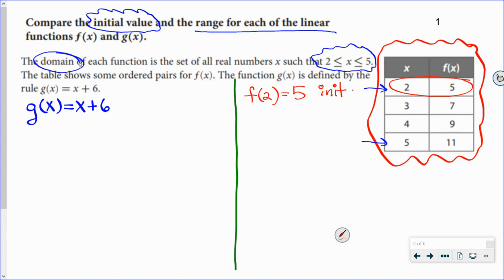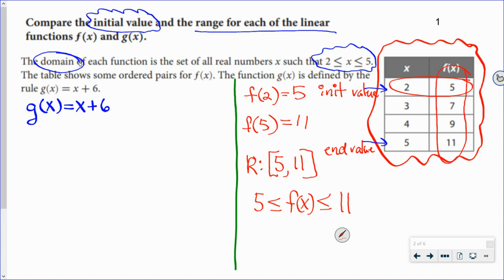My ending value is the last one, the last of the domain at 5. When we put an x in of 5, we get a y of 11. My range, representing r, is from 5 to 11. I'll write that in interval notation: [5, 11]. I also could write that using inequalities: 5 is less than or equal to f(x), which is less than or equal to 11. I can see my range right here: 5, 7, 9, 11. So it goes from 5 all the way to 11.